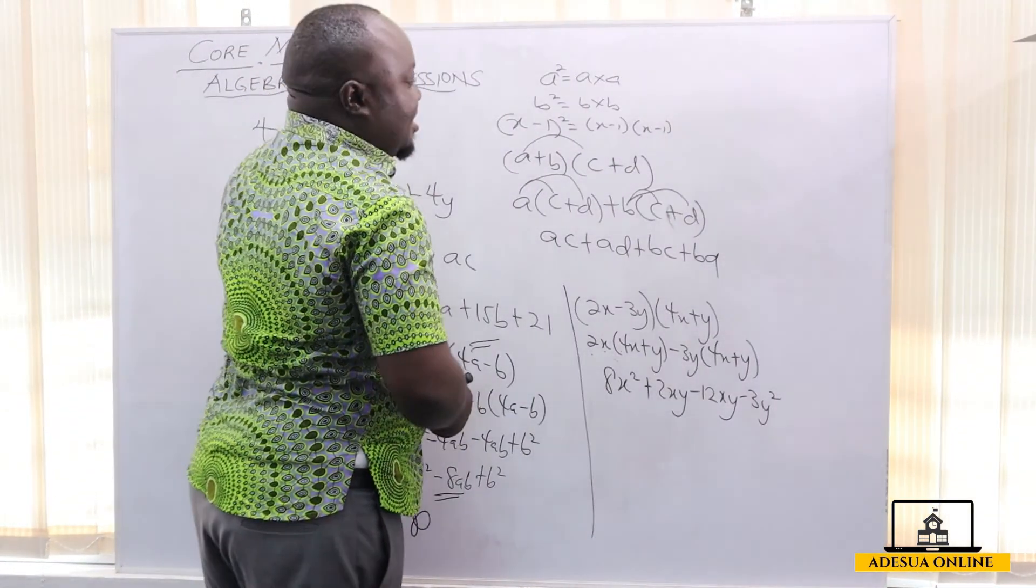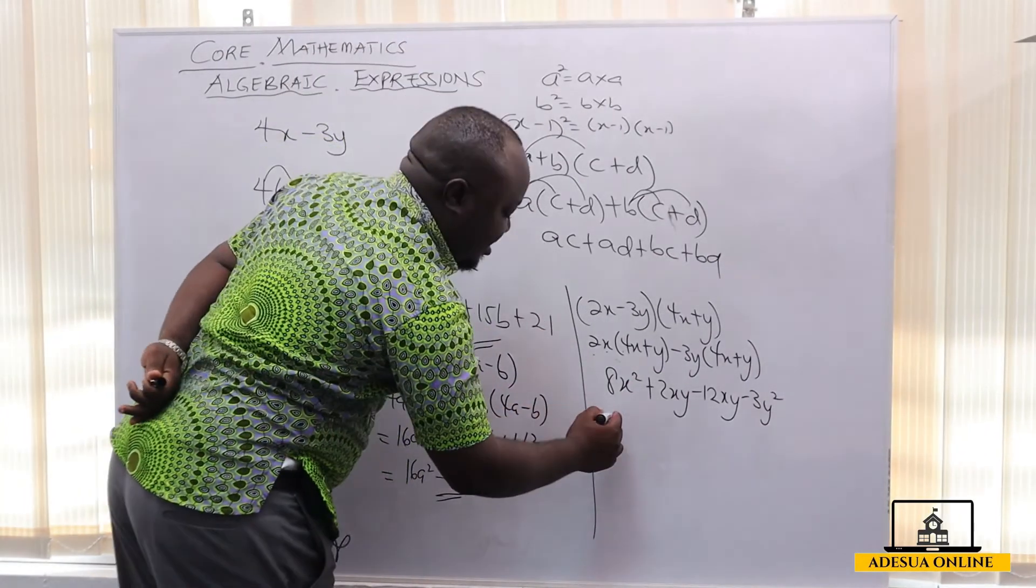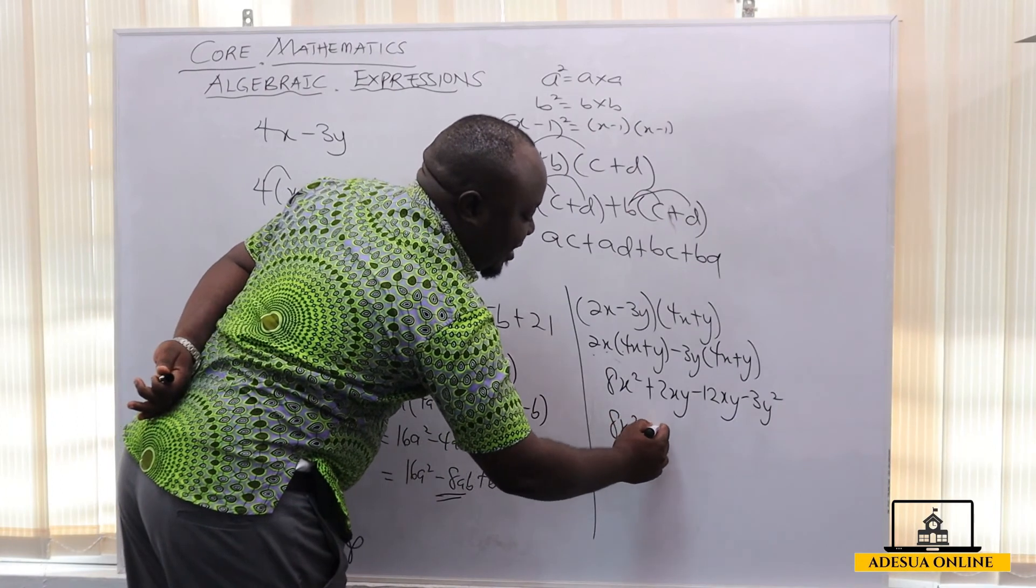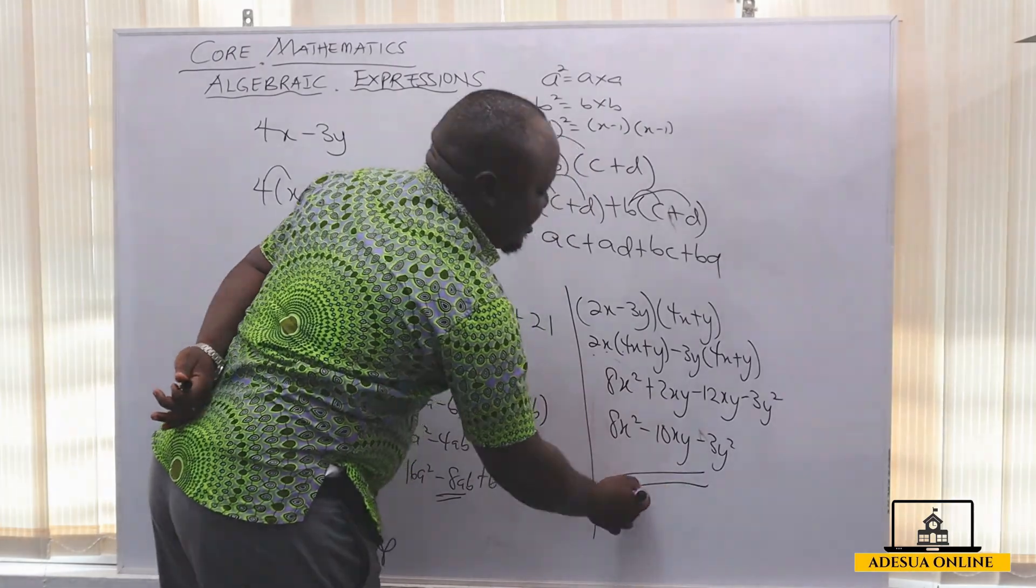Now we continue by simplifying the middle term. Since we have 2xy minus 12xy, which will give us minus 10xy, we shall have 8x² minus 10xy minus 3y² as our final answer.